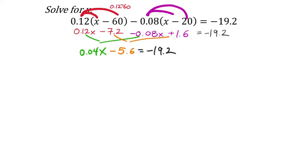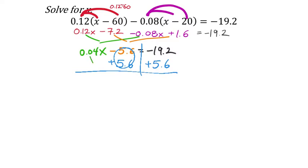We've taken the big equation and after distribution and combining like terms, we have only three terms left, which is much easier. I want to isolate my x's — so I'll add 5.6 to both sides to zero out the negative 5.6. That leaves 0.04x, and this equals negative 13.6.